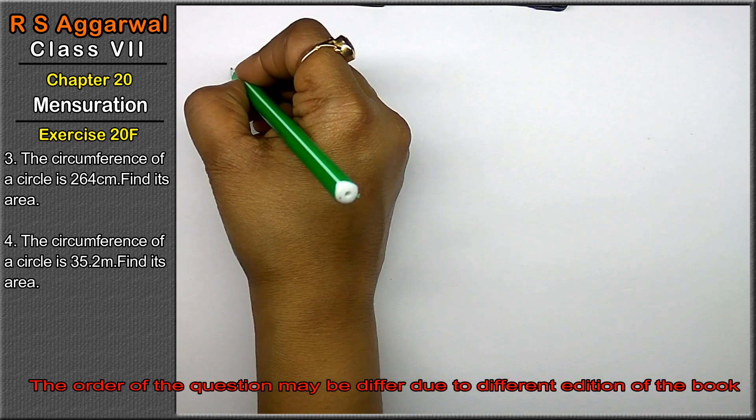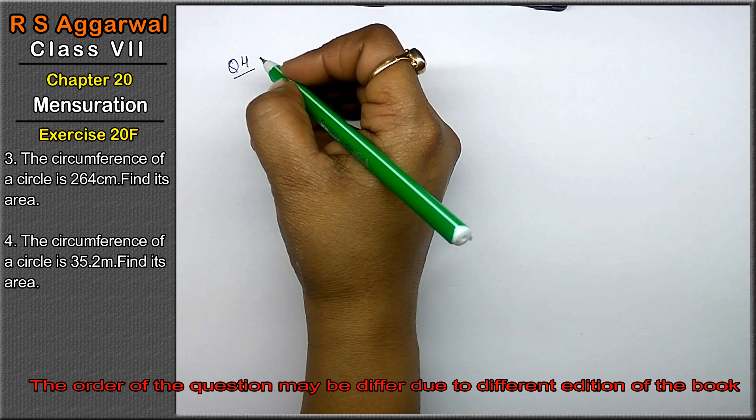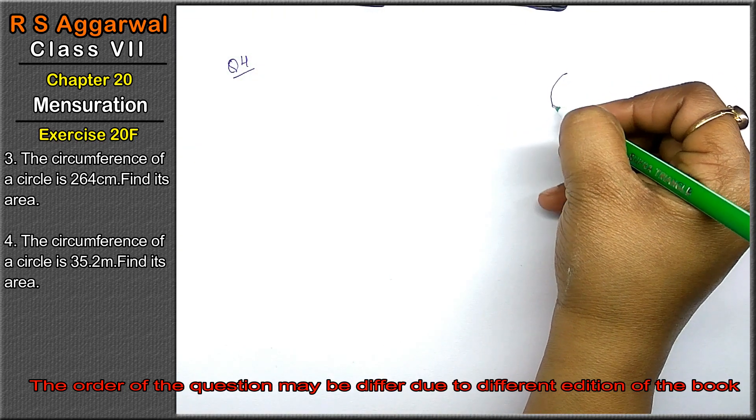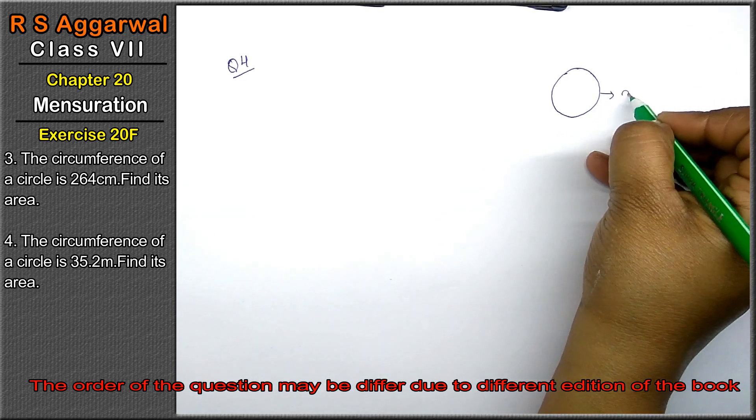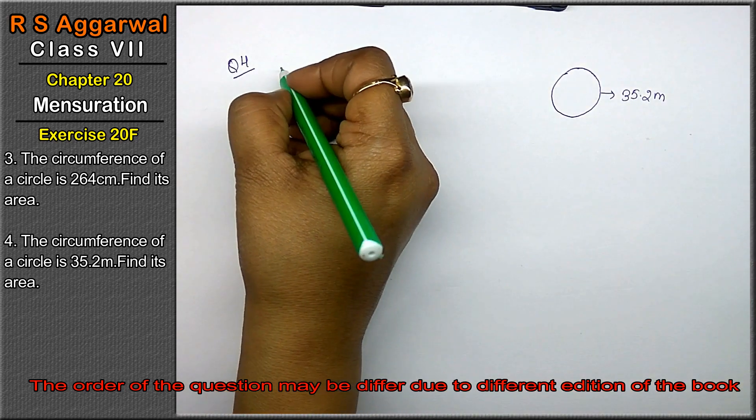Let's do question number 4th of exercise 20F that is mensuration. Question number 4th is the circumference of a circle. Friends, yeh hamaari circumference hai. Circumference hameh dey rakhiyeh 35.2 meter. Right friends? And we have to find out the area.